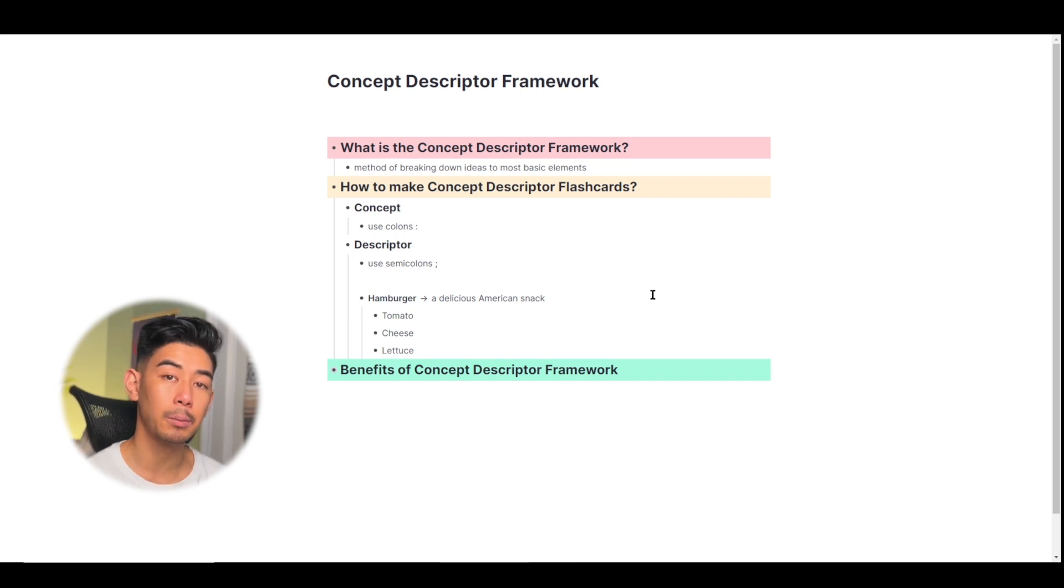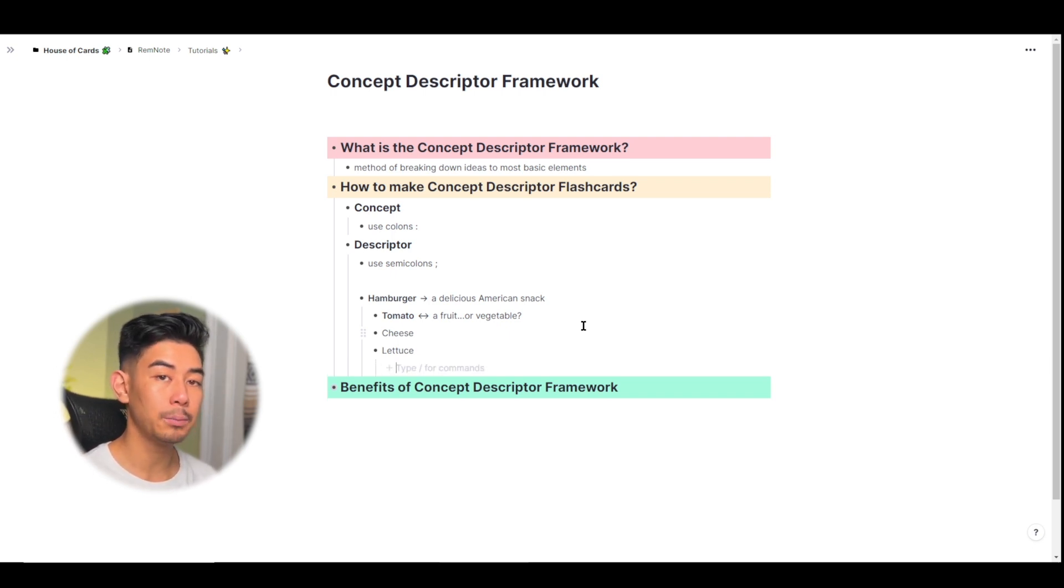I'm going to turn tomato into a double-sided concept card by just using two colons. Just like basic flashcards, the arrow between the flashcards shows which direction of practice it's going in. Now let's move on to the descriptor flashcards, which describe concepts. Descriptor cards should only be made as children of concepts.